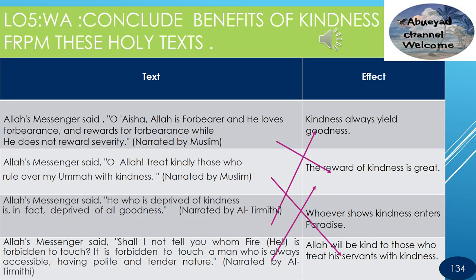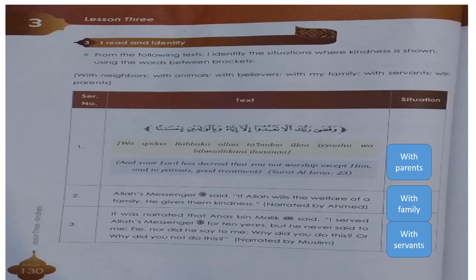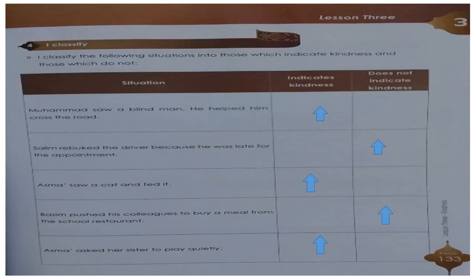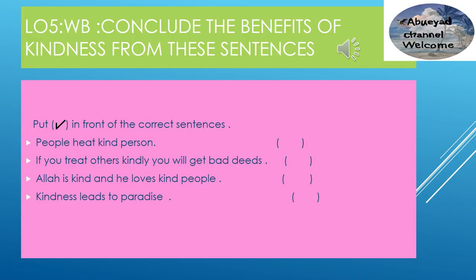The fifth learning objective: conclude the benefits of kindness. The first group, the green one, will conclude the benefits of kindness from the given steps — you have four minutes. Start. The second group, the red one, will conclude the benefits of kindness by answering the following question: put a tick in front of the correct sentence. After you finish, write a summary of the benefits of kindness. You have four minutes. Start.